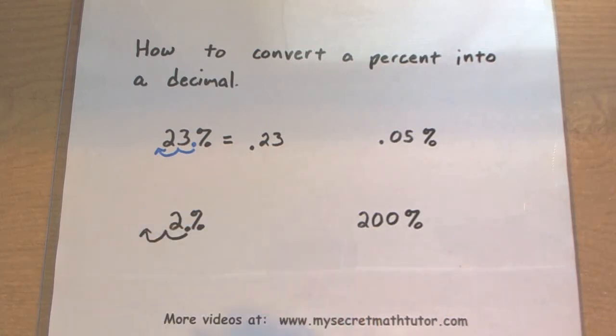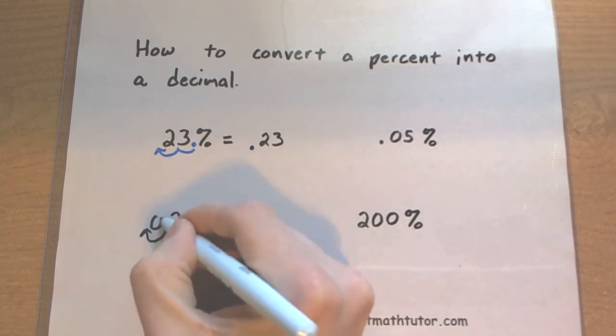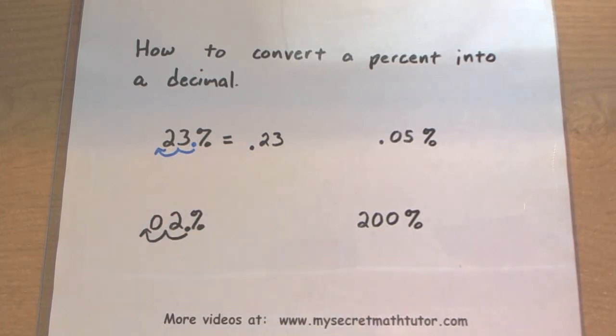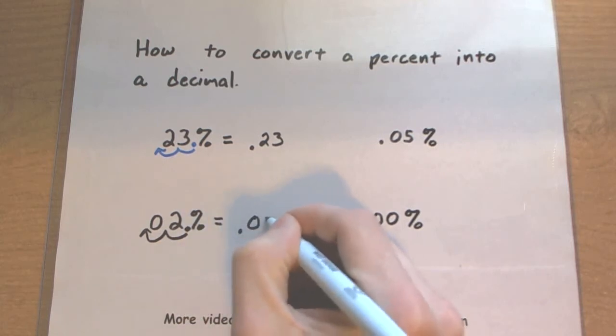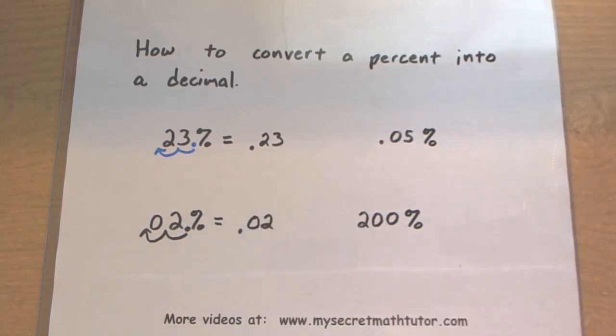and uh-oh. Looks like we need to put in a zero placeholder in order to move it those two spots. Okay, so this is equal to 0.02. And again, I don't write that percent sign anymore because it is now a decimal.